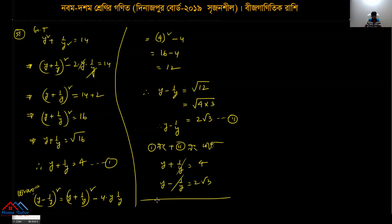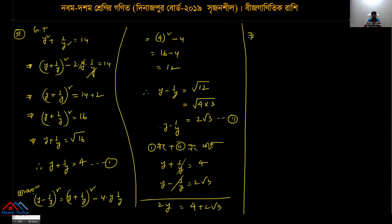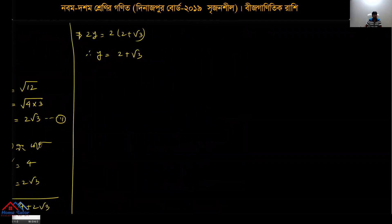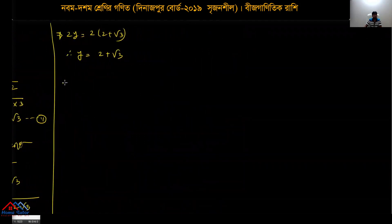Adding the two equations: y + (2√3). Taking 2 as common factor: 4 + 2√3, giving 2(2 + √3). Dividing both sides by 2: y = 2 + √3. So y = 2 + √3.